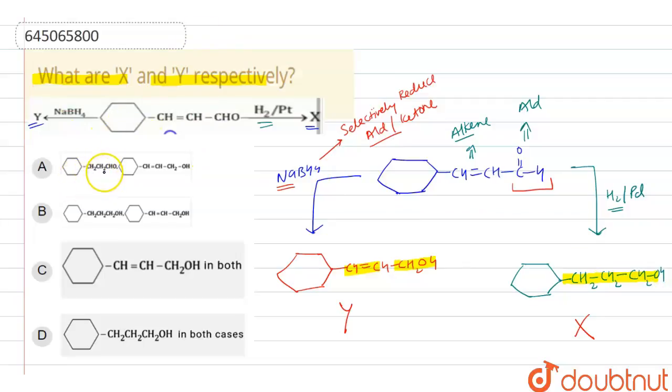So option A is saying that CH2CH2CH2 aldehyde is there. No, it is wrong. Why? Because in any of them, there is no aldehyde present.